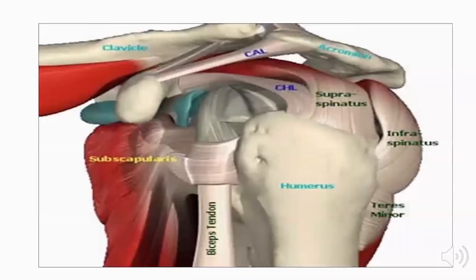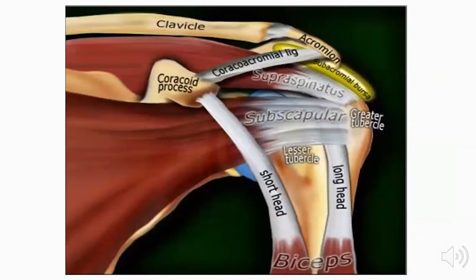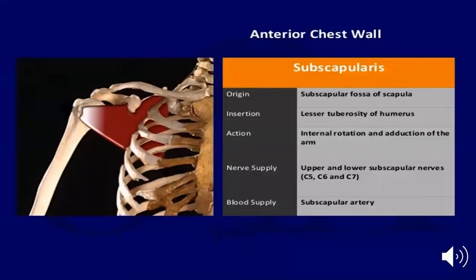These are the components of the rotator cuff as seen in the picture: the supraspinatus mainly superiorly, the infraspinatus and teres minor posteriorly, and the subscapularis mainly anteriorly. The supraspinatus and subscapularis are also apparent in this anterior view of the shoulder.